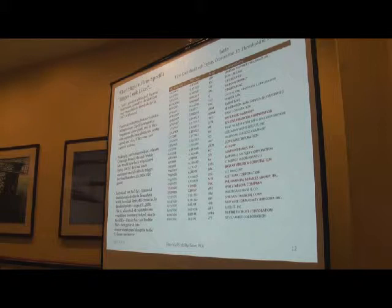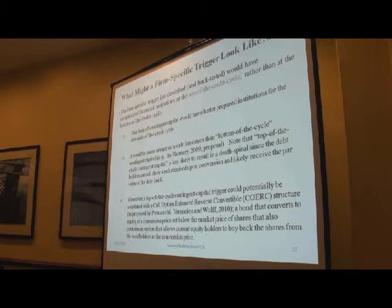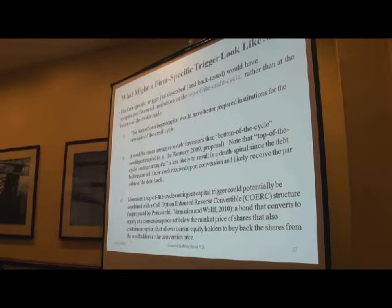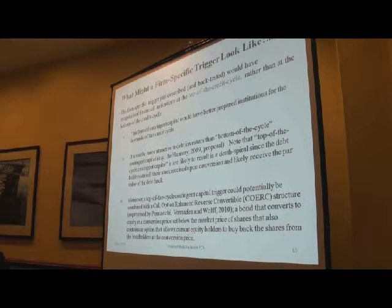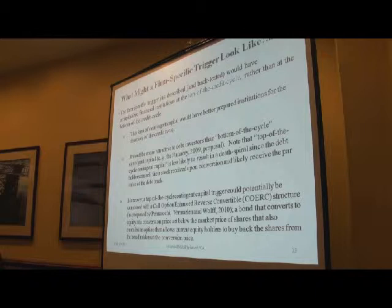If this trigger had been used, these firms could have been recapitalized using contingent capital prior to when Fannie and Freddie went down and also prior to the Lehman bankruptcy. When we backtest, what we see is that institutions would have been recapitalized at the top of the credit cycle rather than the bottom, and this form of contingent capital would have better prepared institutions for the downside. It would also have been attractive to debt investors because they would have been able to get stock, sell it, and reinvest. So it's less likely to create a debt spiral than bottom-of-cycle contingent capital.